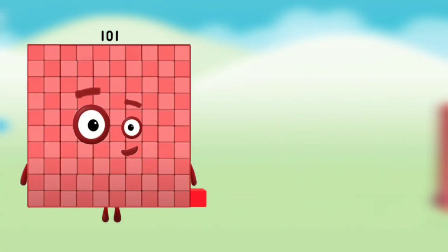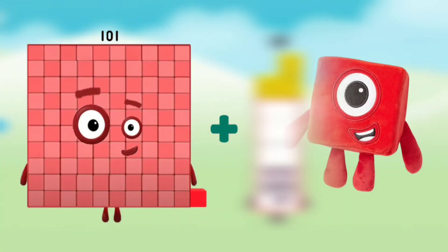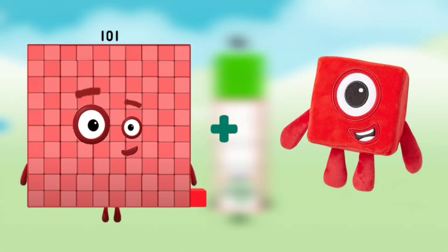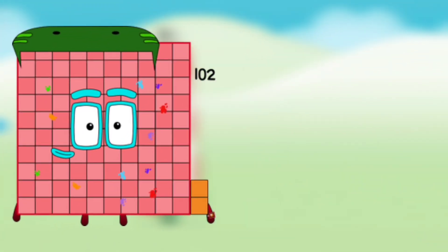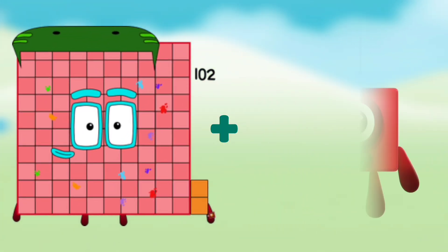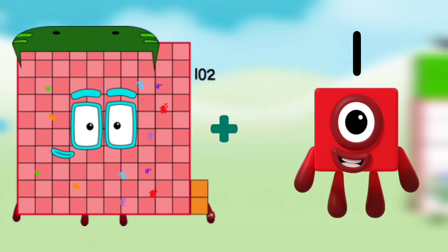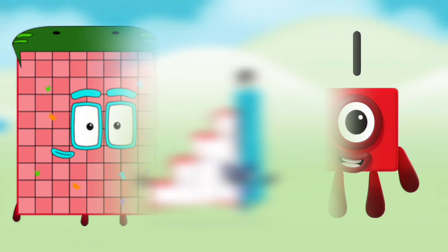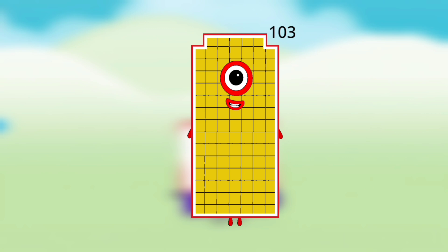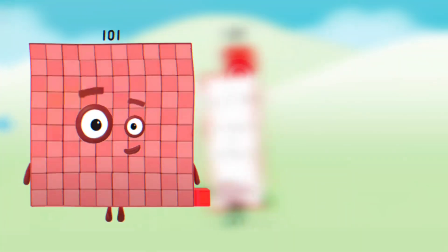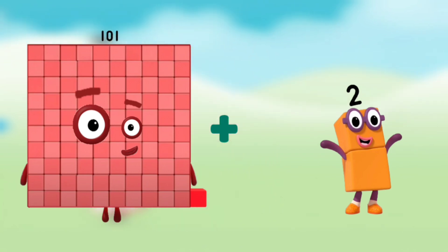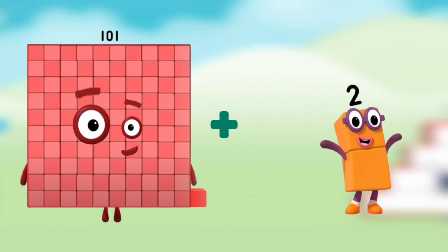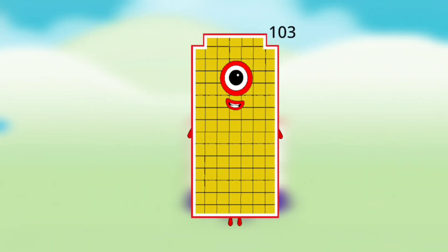Number blocks 101 plus number block 1 equals number blocks 102. Number blocks 102 plus number block 1 equals number blocks 103. Number blocks 101 plus number block 2 equals number blocks 103.